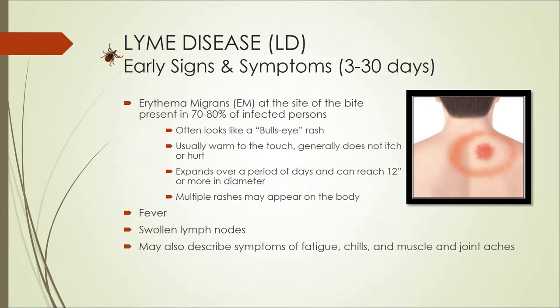These are the early signs and symptoms that an affected person may present within 3 to 30 days. 70 to 80 percent of people infected with Lyme disease will develop a rash called erythema migrans, or EM for short, where the tick had attached. Often it will develop into what's referred to as the classic bullseye rash. The rash may be warm to the touch, but generally does not hurt or itch. It expands over a period of days and can grow to be 12 inches in diameter or larger.